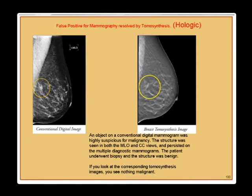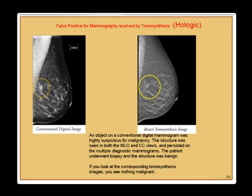The advantage of tomosynthesis is using the same total dose — each projection uses less dose to maintain the same integrated dose as a combined CC and MLO mammogram. Longer compression time affects patient comfort. A recent case showed a false positive on conventional digital mammography appearing suspicious, but the tomosynthesis image revealed it to be normal anatomy rather than malignant tissue.